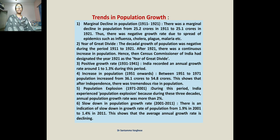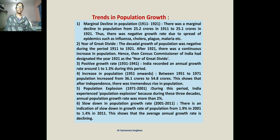That is why 1921 is called the 'Year of Great Divide.' The decadal growth of population was negative during the period 1911 to 1921. After 1921 there was a continuous increase in population. Hence the Census Commission of India has designated 1921 as the 'Year of Great Divide.' You have to remember this — 1921 is called the Year of Great Divide.